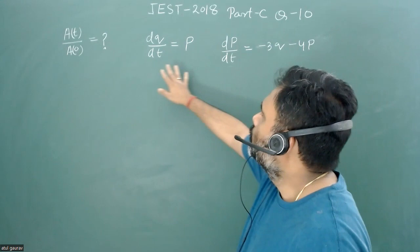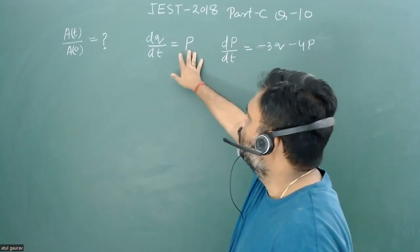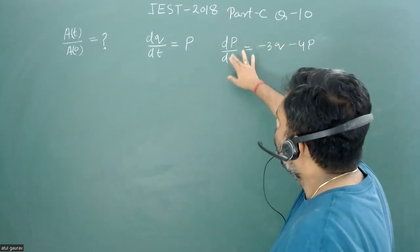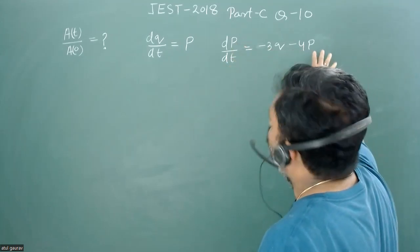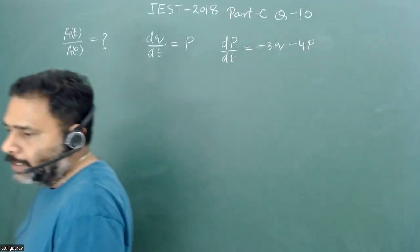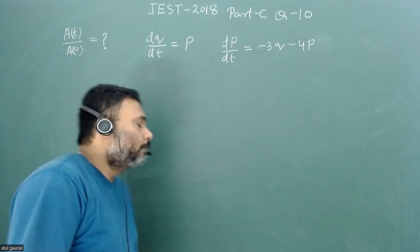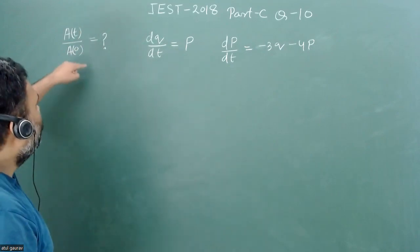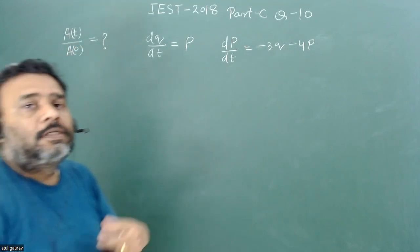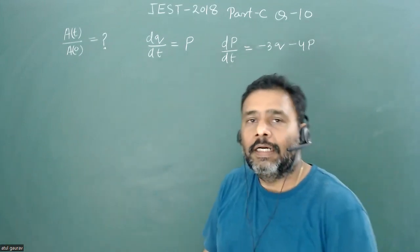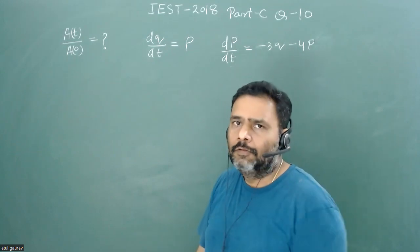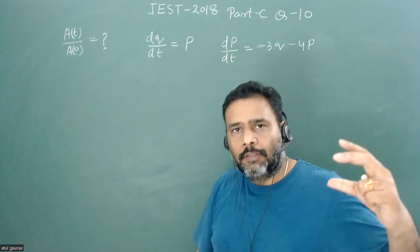The problem gives us dq/dt = p, where q is the generalized coordinate and p is the generalized momentum, and dp/dt = -3q - 4p. These are two first-order differential equations in terms of generalized coordinate and generalized momentum. We have to determine how the phase area after some time t varies with the initial phase area at t = 0.